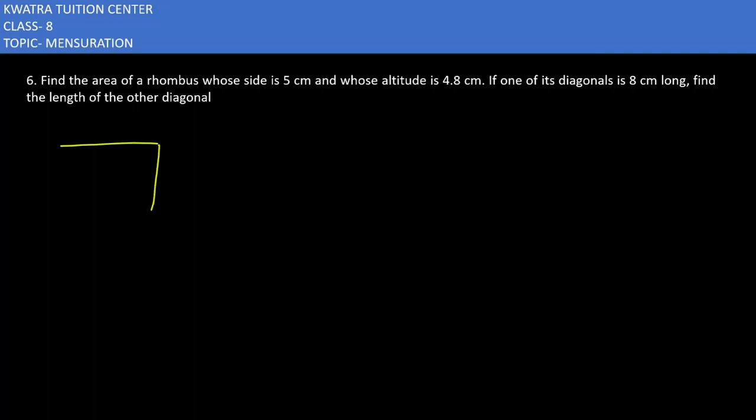One is base into altitude and the other is half into d1 into d2. Now here you have given one side is 5 centimeters, altitude is 4.8 centimeters, and then what you have to do next is you have to find the other diagonal. We'll use the formula of area of rhombus using base and altitude.